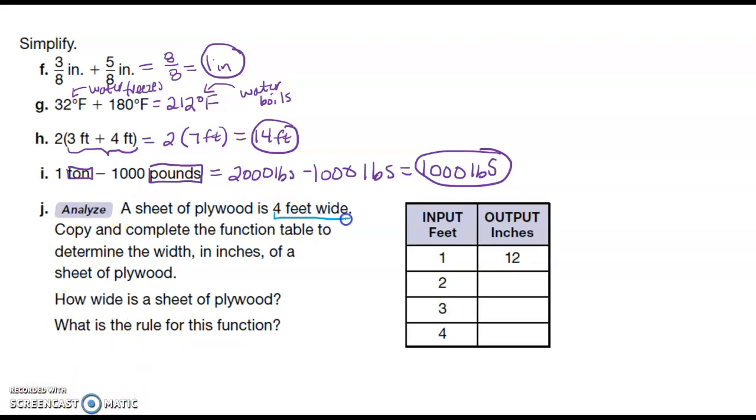A sheet of plywood is four feet wide. Copy and complete the function table to determine the width and inches of a sheet of plywood. How wide is a sheet of plywood? What is the rule for this function? We have one foot is equal to 12 inches. So the rule for this function is that I'm going to multiply feet times 12. So two feet times 12 is 24, three feet times 12 is 36, four feet times 12 is 48. So the plywood is 48 inches wide.